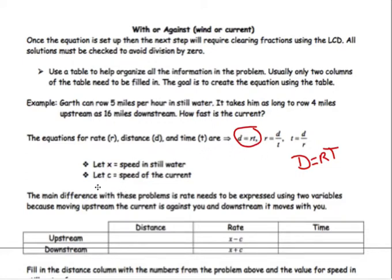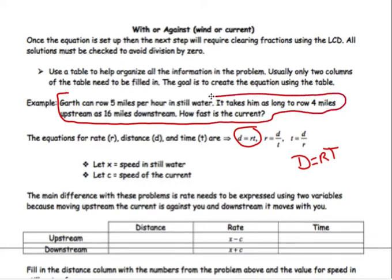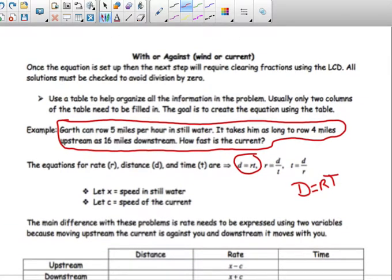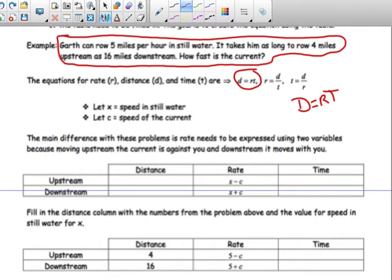We're going to look at this and use a certain equation. A kid named Garth is going to be going down in a boat, and we're going to try to figure out how fast the current is going. We can set up a little chart, which makes it easier. We're going to let X equal the speed in still water and C equal the speed of the current, so you will know which one is which.